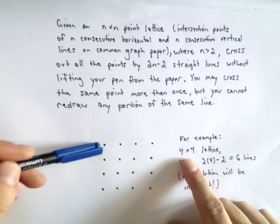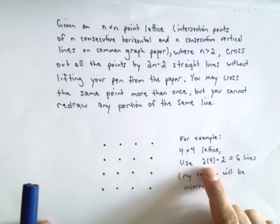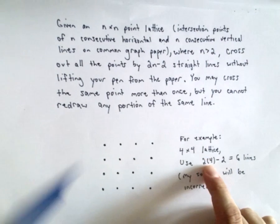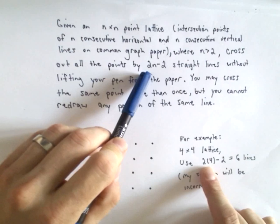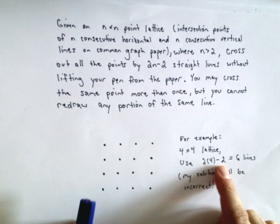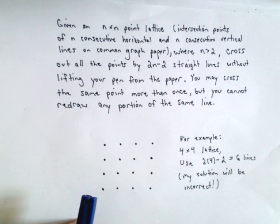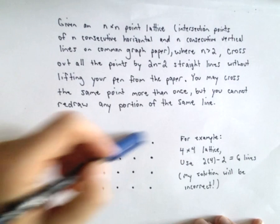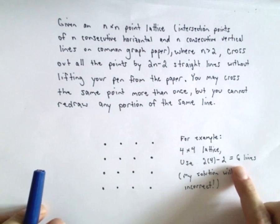So for example here, I've got a four by four lattice. So in this case, well, n is equal to four, so that means we would use 2 times 4 minus 2, or 6 lines total. So it says we can cross out all 16 of these points using at most six lines.